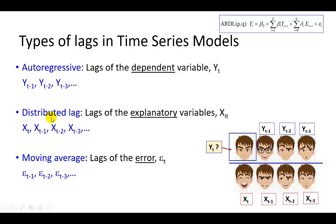Distributed Lag is the second type, which looks at lags of the explanatory variable and how they impact the dependent variable. We could be looking at how another variable's behavior over the past few periods impacts what the dependent variable does today. Additionally, we could also be looking at how the explanatory variable's current behavior impacts the dependent variable — whether that relationship is positive or negative — all of which are ascertained in the context of regression analysis.